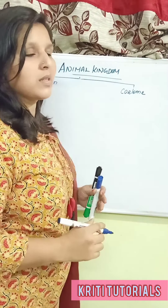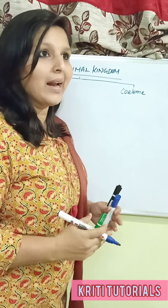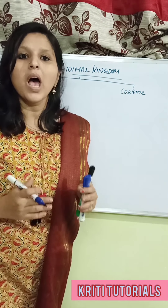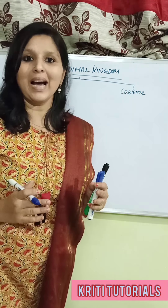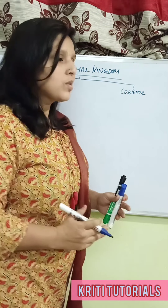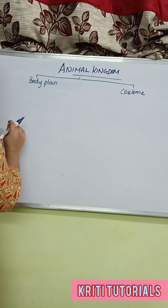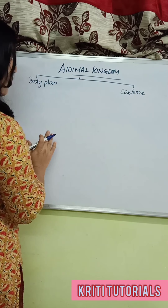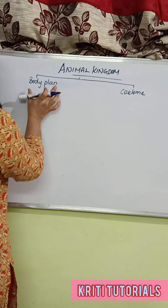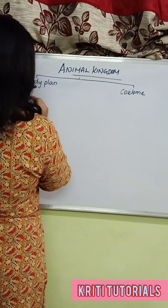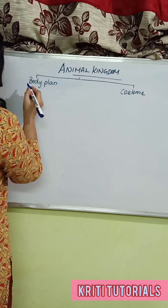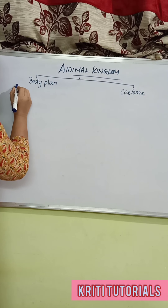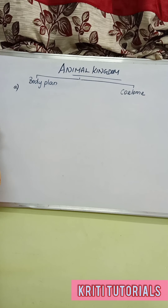Body plan refers to how the body of the species has been arranged — the arrangement patterns which we call the body plan. Body plan is categorized into three different types.